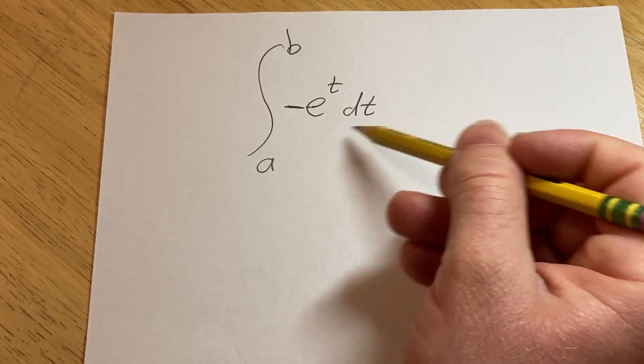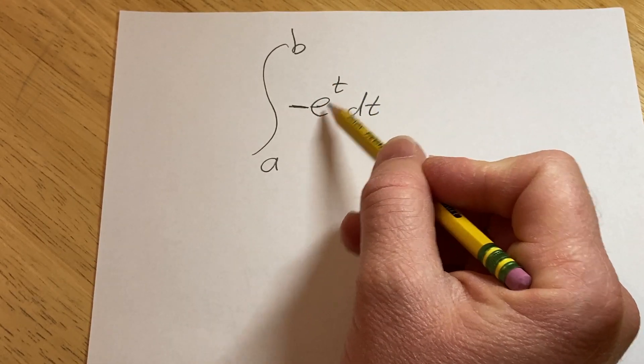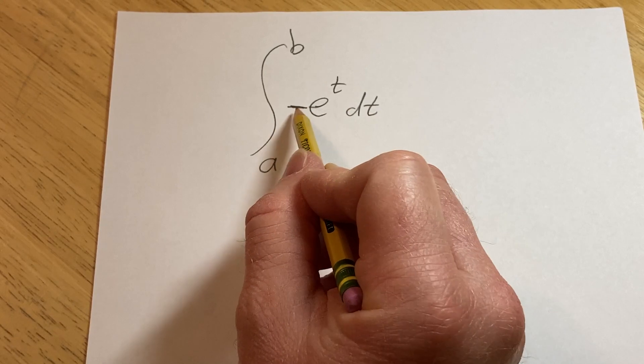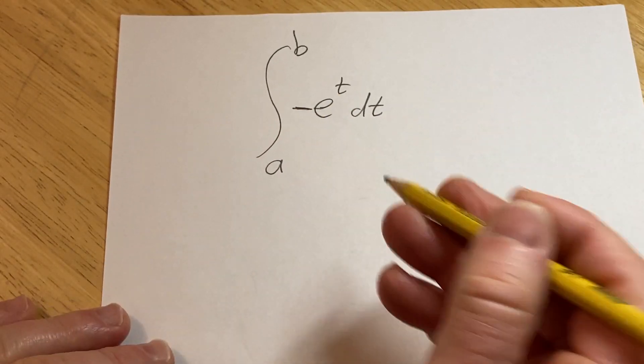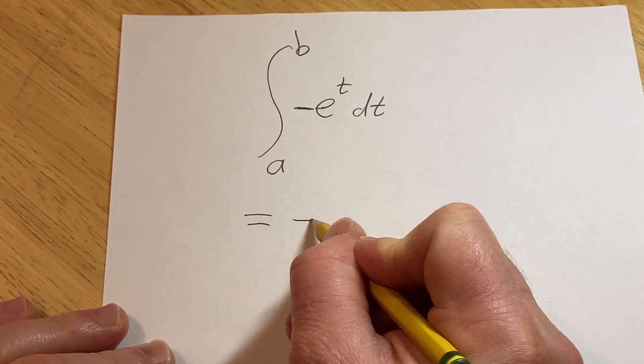We're going to integrate minus e to the t with respect to t from a to b. So this problem is actually pretty simple. Basically, the integral of e to the t is simply e to the t. We have a negative here and it just hangs out.